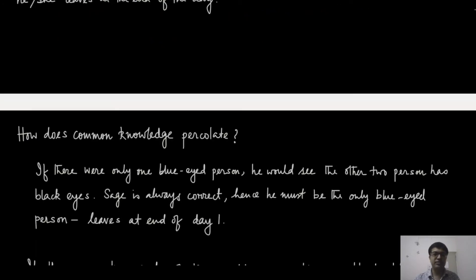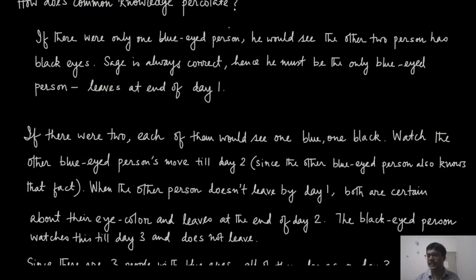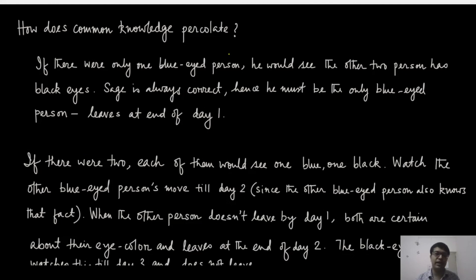Let me give you the answer. This is exactly how common knowledge will percolate. Let us think in three different scenarios. If there was only one blue-eyed person and the sage has said what he said, then he would see that the other two people are black-eyed. He will immediately know, because the sage is always correct, that his own eye color is blue. So at end of day one, he should leave.